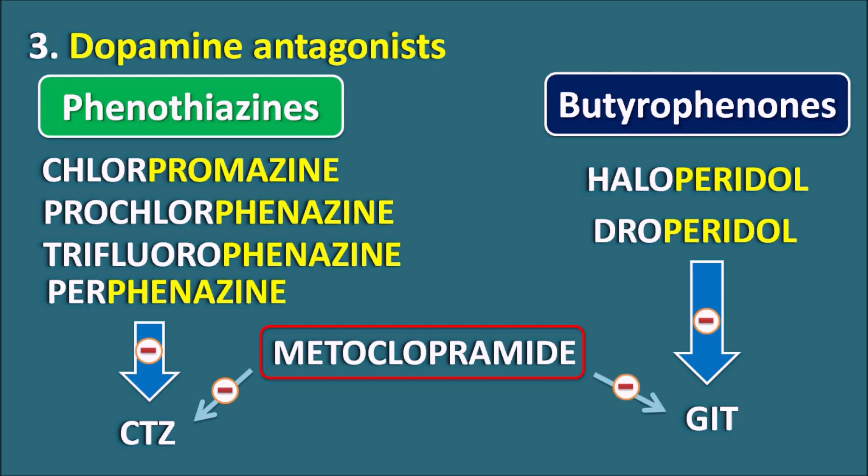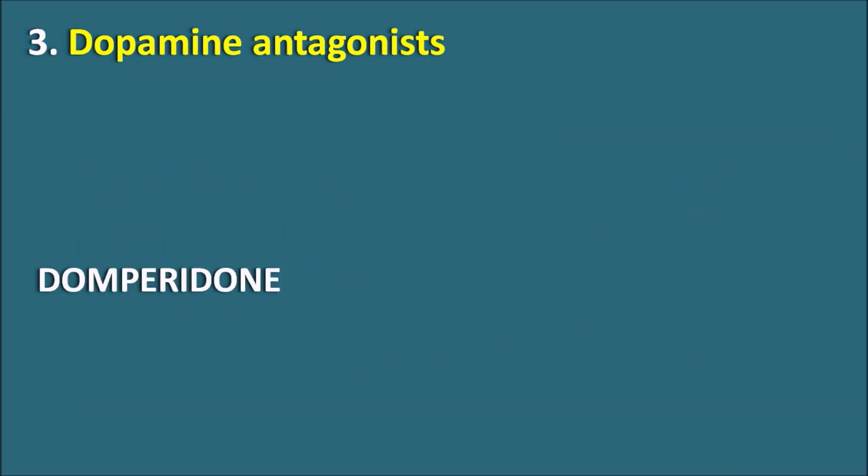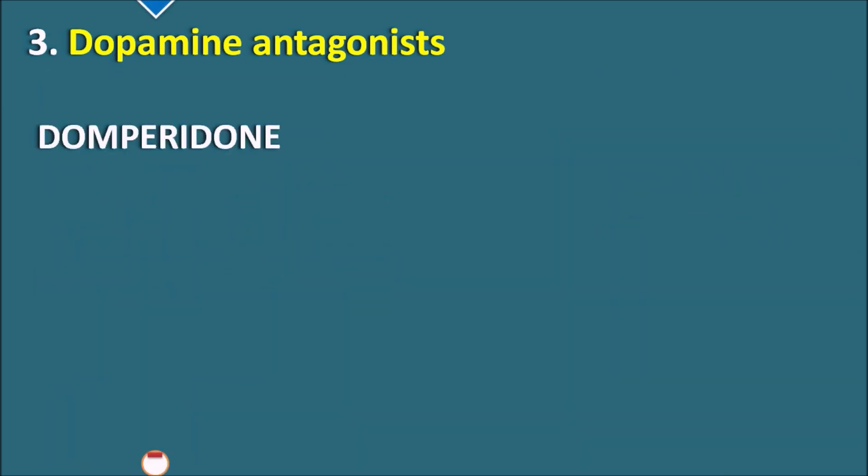We also have domperidone, which blocks dopamine receptors on the CTZ, thereby inhibiting nausea and vomiting induced by toxic chemicals. However, compared to metoclopramide, domperidone cannot cross the blood-brain barrier, so it only shows peripheral actions. Domperidone is also called a prokinetic drug because it increases GI motility, thereby decreasing the reflex of nausea and vomiting.